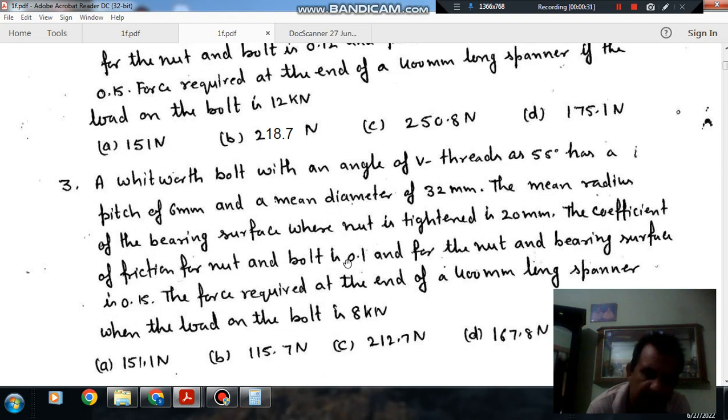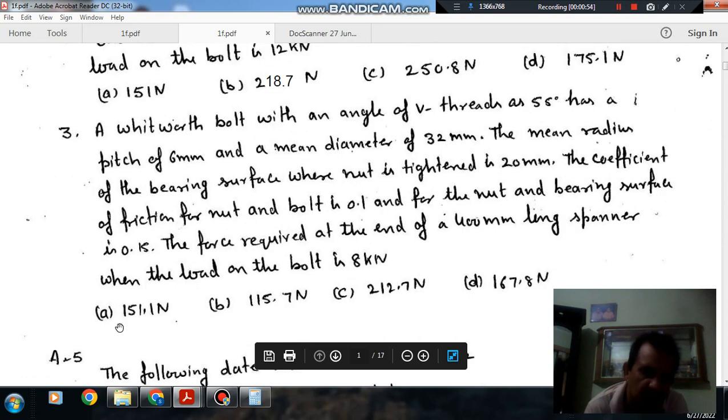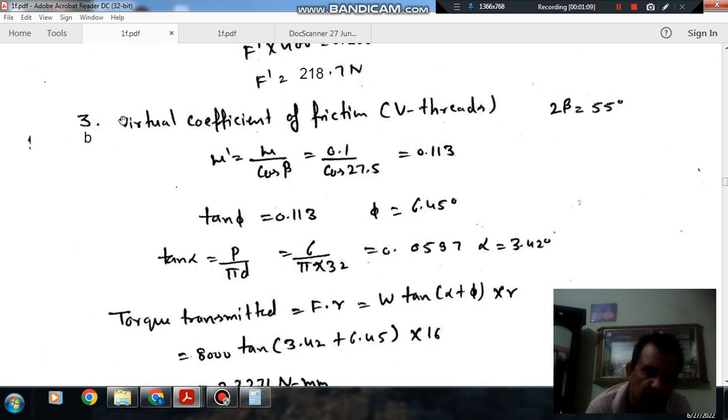The mean radius of the bearing surface when the nut is tightened is 20 mm. The coefficient of friction for the nut and bolt is 0.1, and for the nut and bearing surface is 0.15. The force required at the end of a 400 mm long spanner when the load on the bolt is 8 kilonewtons. Option A: 151.1 newtons, option B: 115.7 newtons, option C: 212.7 newtons, and option D: 167.8 newtons.